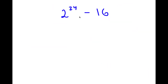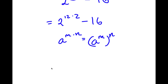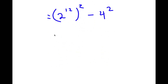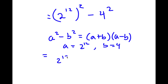In this problem, I have 2 to the power of 24 minus 16. To solve it, I'm going to rewrite 2 to the power of 24 as 2 to the power of 12 times 2. Using the rule that a to the power of m times n equals (a to the power of m) to the power of n, I get (2 to the power of 12) squared. And 16 is the same thing as 4 squared. Now, using the difference of squares — a squared minus b squared equals (a plus b)(a minus b) — with a equal to 2 to the power of 12 and b equal to 4, I have (2^12 + 4)(2^12 - 4).